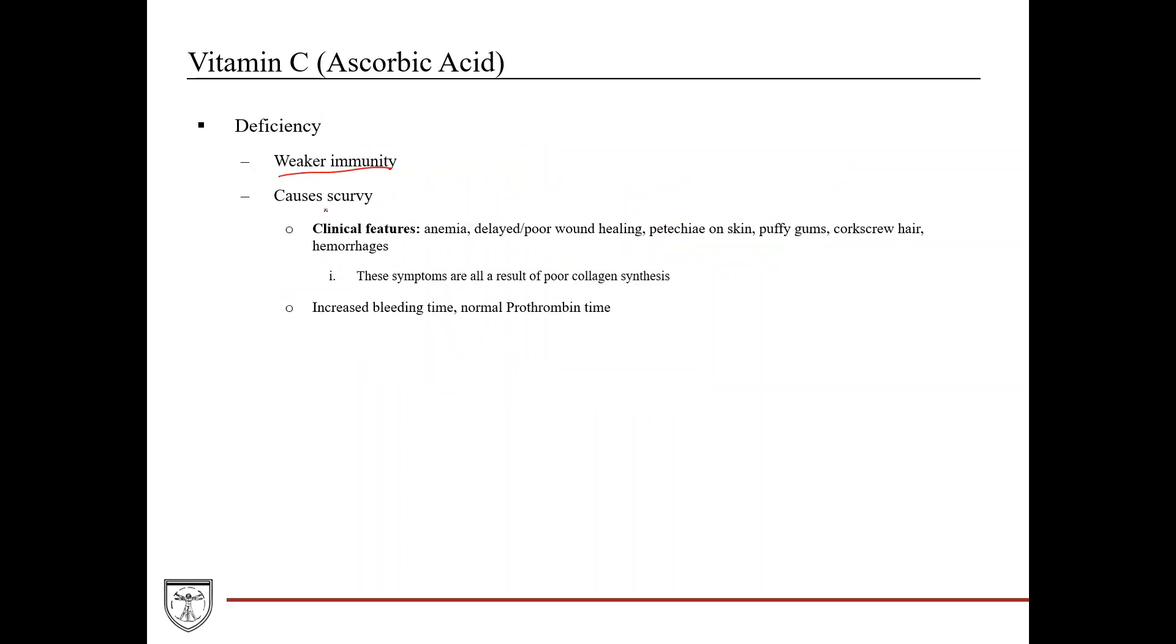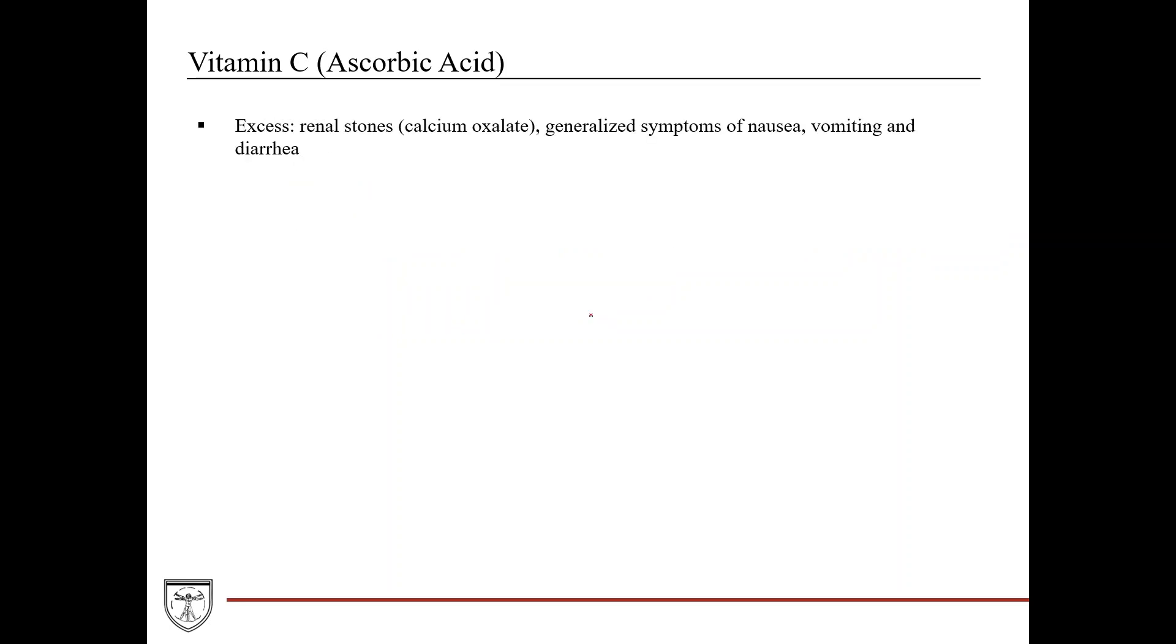If you have a deficiency of vitamin C, you're going to have weaker immunity and you're at risk for developing scurvy. Clinical features are anemia, delayed poor wound healing, petechiae on the skin, puffy gums, corkscrew hair, and hemorrhages. All of these symptoms are due to poor collagen synthesis. You're also going to have increased bleeding time on your labs but normal prothrombin time. If you have an excess of vitamin C, you're at risk for developing renal stones, specifically calcium oxalate, and generalized symptoms of nausea, vomiting, and diarrhea.